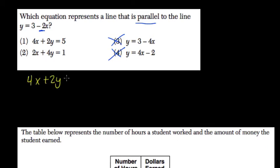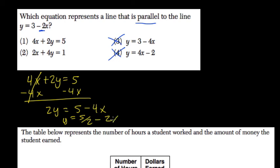4x plus 2y equals 5. We subtract 4x on both sides. Our goal is to get it into mx plus b format. 2y equals 5 minus 4x. So when I divide both sides by 2, we get y equals 5 halves minus 2x.